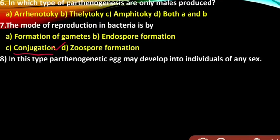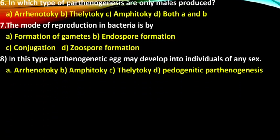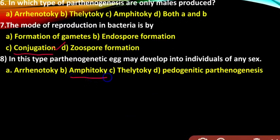Question 8: In this type, the parthenogenetic egg may develop into individuals of any sex. Options are Arrhenotoky, Ambitoky, Thelytoky, and Paedogenic Parthenogenesis. The answer is Ambitoky.